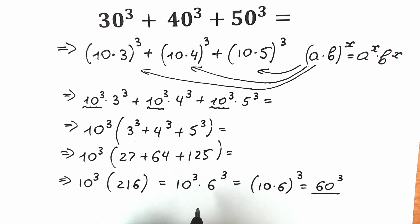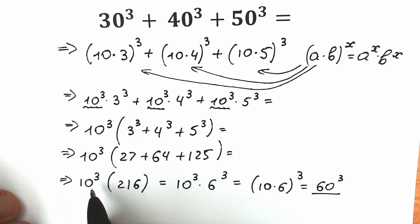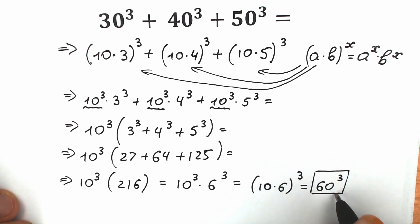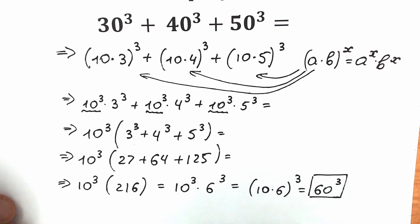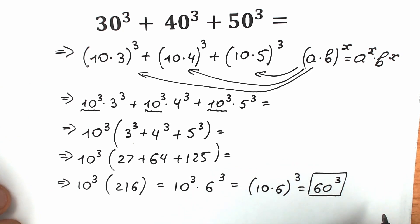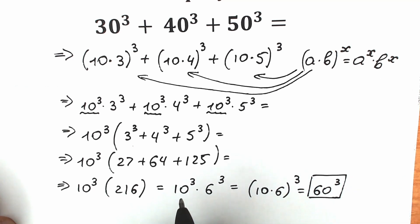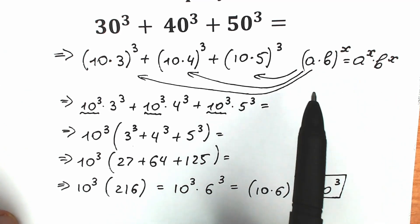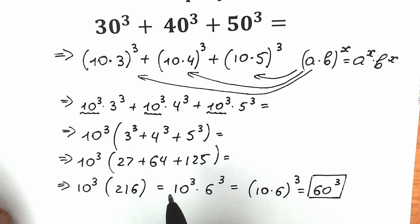We have 6 times 6 times 6 equal to 216, and we can write the full answer with the zeros. But I'll leave it as 60 cubed — it's up to you whether you prefer the power form or the full number. This is an easy challenge, but great for students and kids learning power rules.